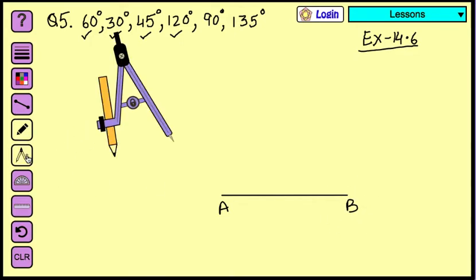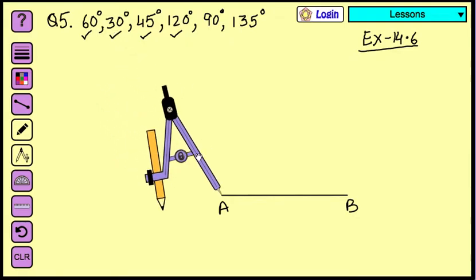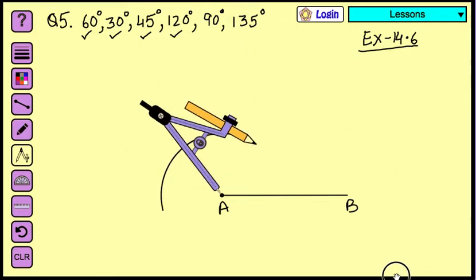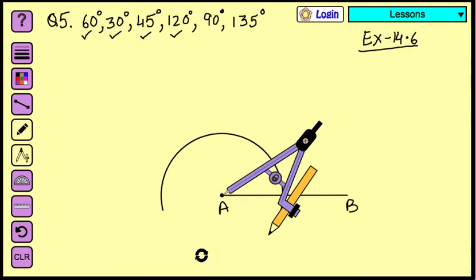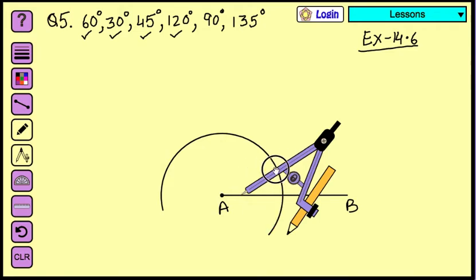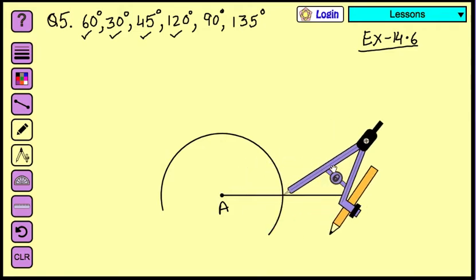As we did it earlier, first we are going to construct a 60 degree angle. So we are going to place the needle at one end of the line and we are going to draw an arc. This is going to cut the line at one point. Place your needle of your compass. Do not change the distance between the needle and pencil. It's very necessary, always lock it.